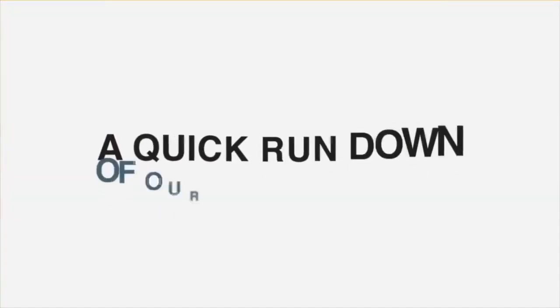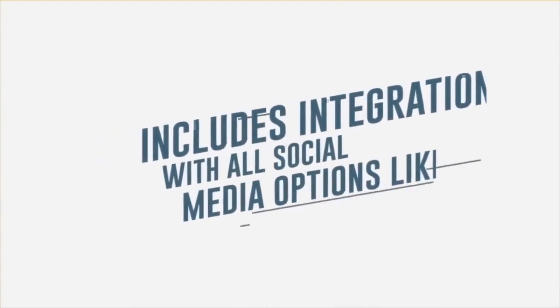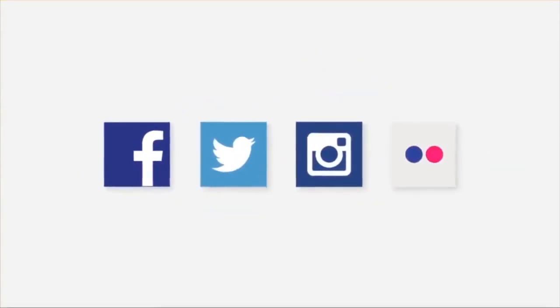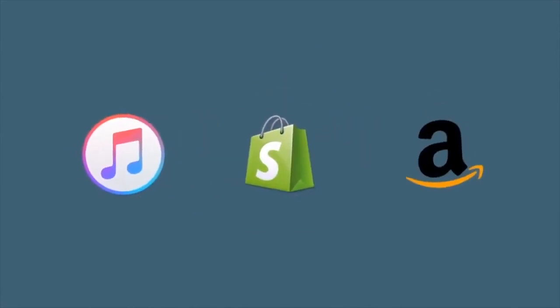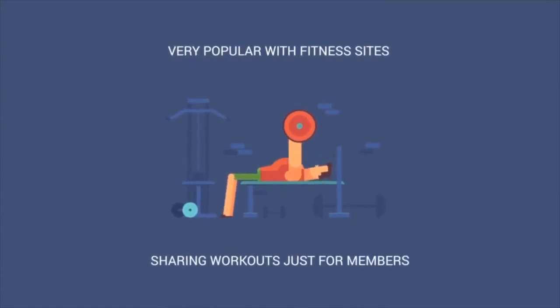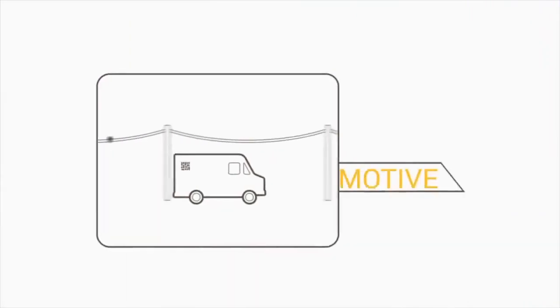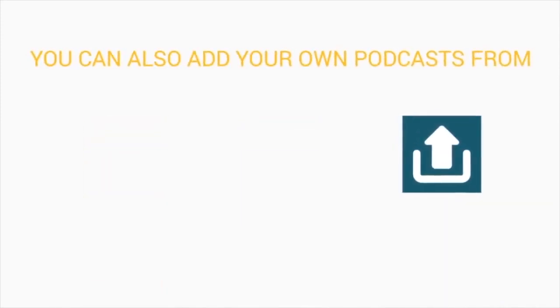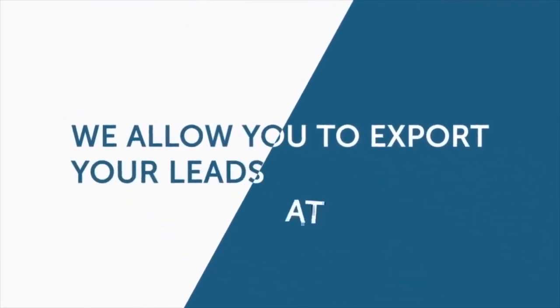A quick rundown of our other features includes integration with all social media options like Facebook, Twitter, Instagram, and Flickr. You can also build your own commerce store with iTunes, Shopify, Amazon, or build your own customer catalog. We have a special members gate system perfect for building internal company apps or protected information — very popular with fitness sites sharing workouts. Building out a directory listing is perfect for realtors and automotive businesses. You can upload videos from YouTube or Dropbox, add your own podcast from SoundCloud, RSS feeds, or upload your own MP3s. Collect names and emails with our opt-in builder — integrates with Aweber, Infusionsoft, MailChimp, and GetResponse. You can also export your leads at any stage.